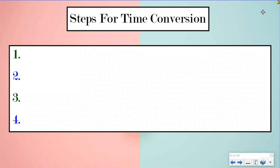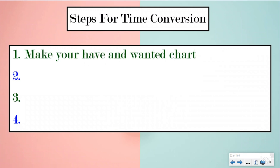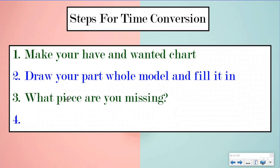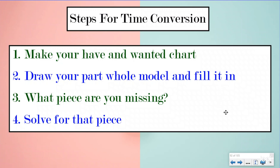Here are the steps for time conversion. Step one: make your have and wanted chart — that's where you list what you have and what you want to turn it into. Step two: draw your part-whole model and fill it in. We're going to use tape diagrams today to help prove our time conversions. Step three: identify what piece of your part-whole model you're missing. Step four: solve for that piece.